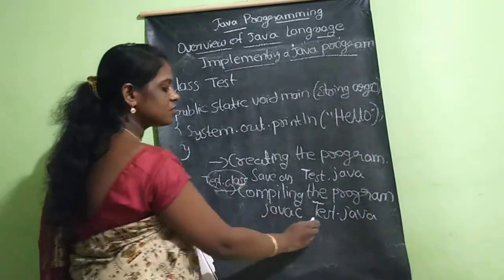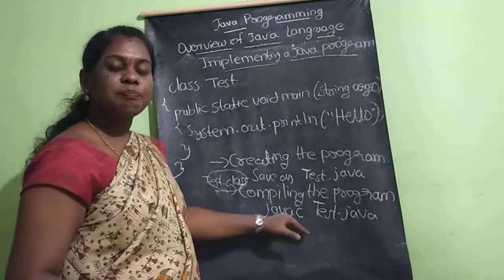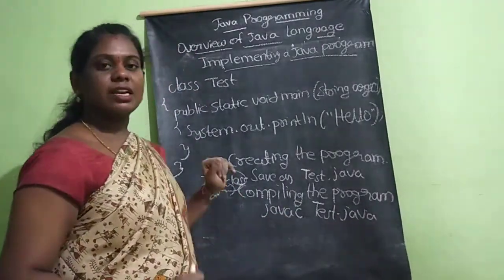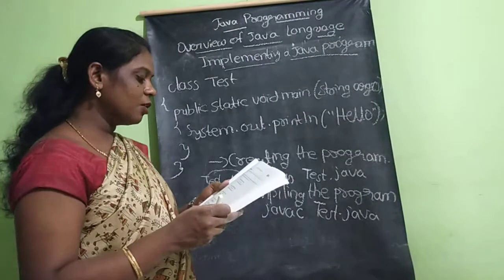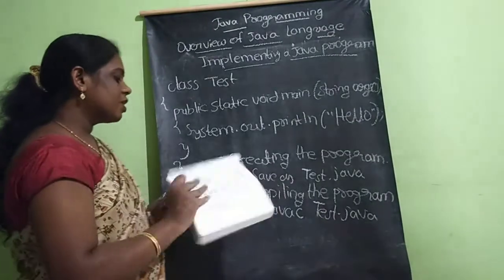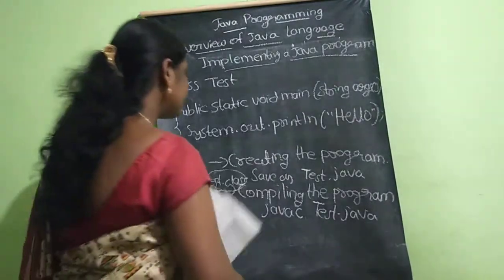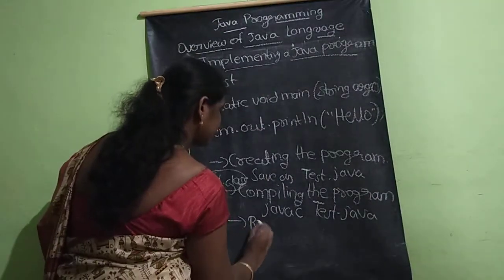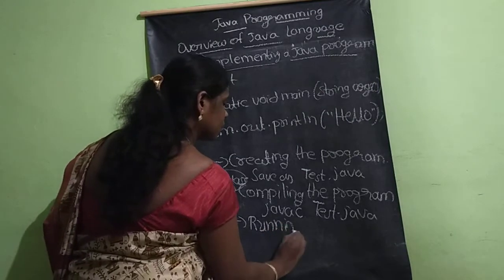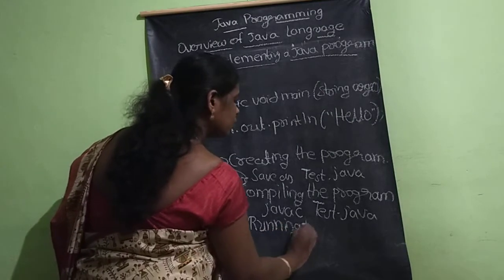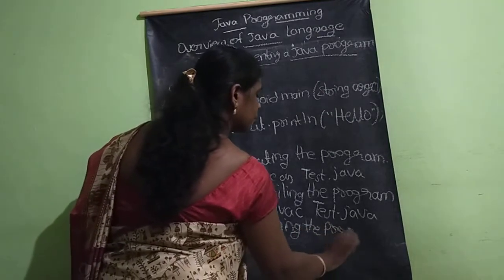Just type 'javac Test.java'. If there are no errors, the next line will print — meaning compilation succeeded. Then the third step is running the program.